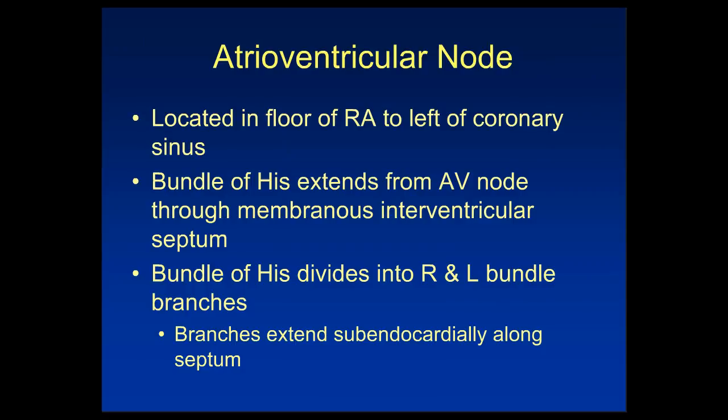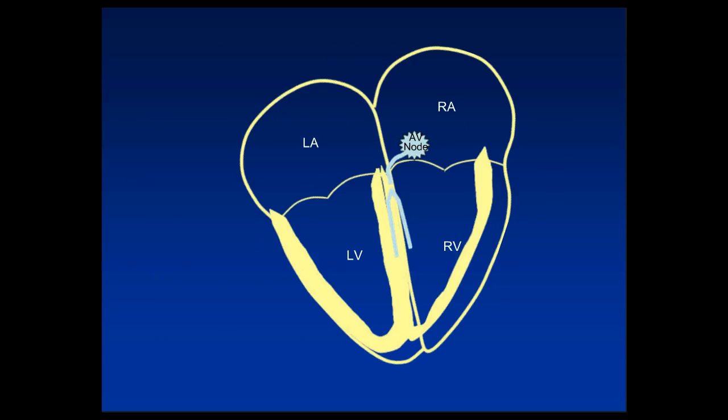The atrioventricular node is located in the floor of the right atrium to the left of the coronary sinus. The bundle of His extends from the atrioventricular node through the membranous intraventricular septum, and then divides into the right and left bundle branches, which extend subendocardially along the septum.